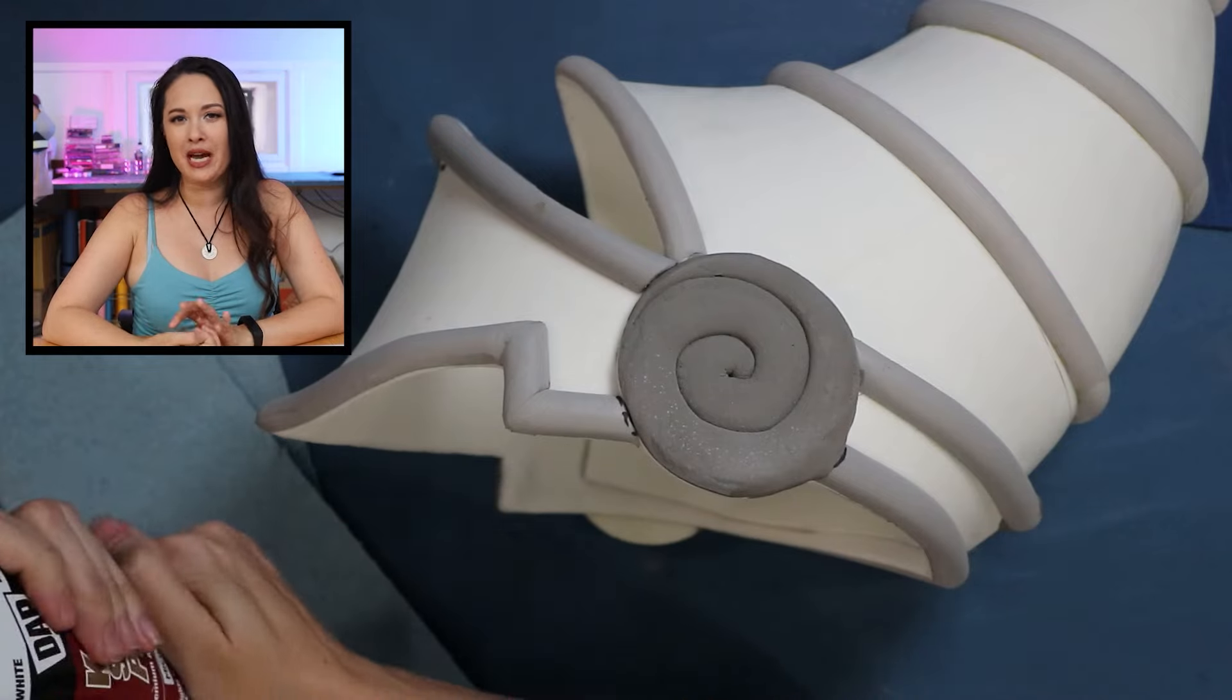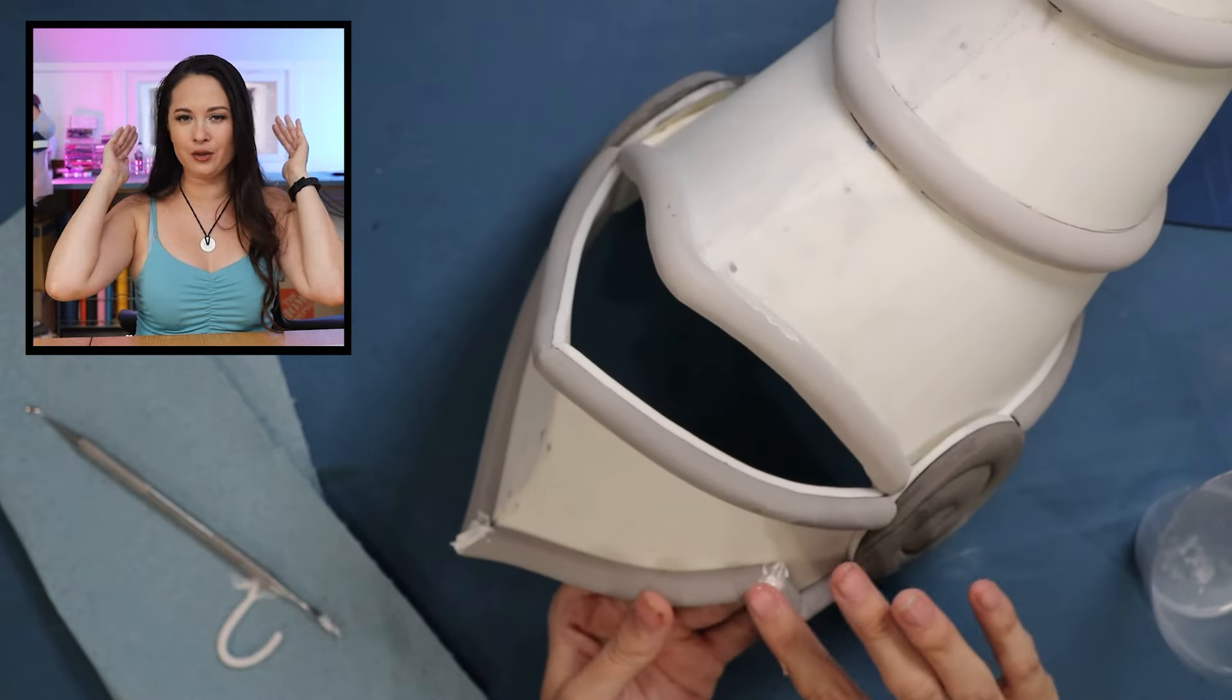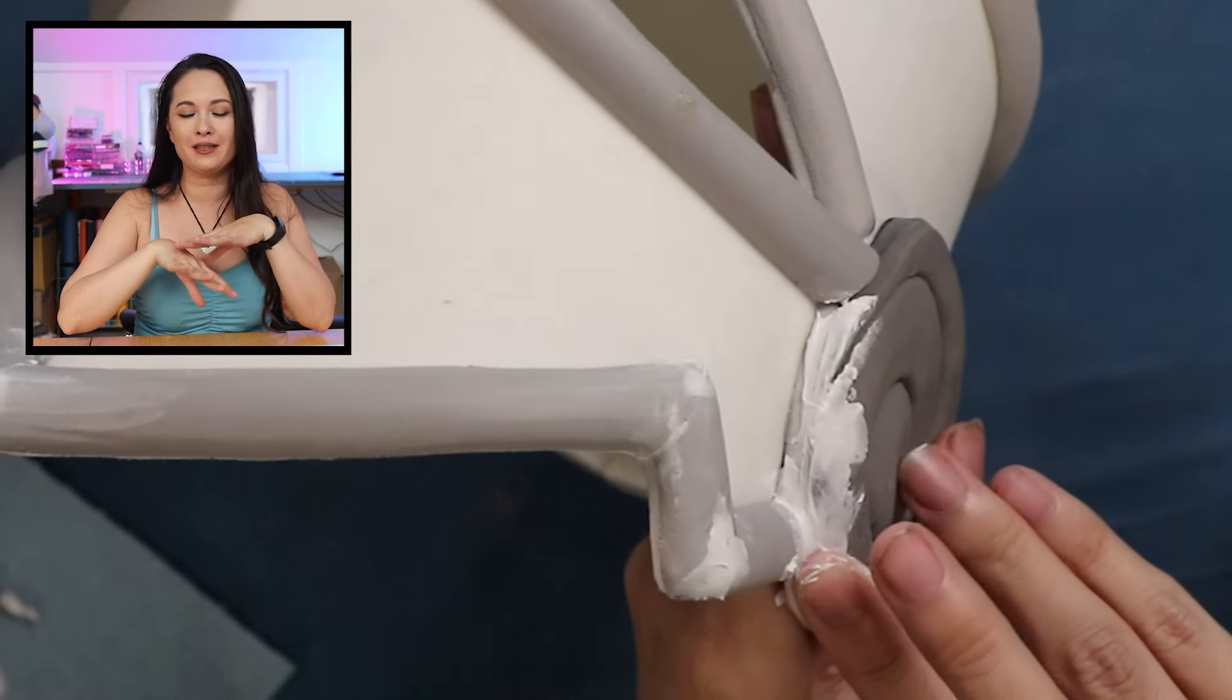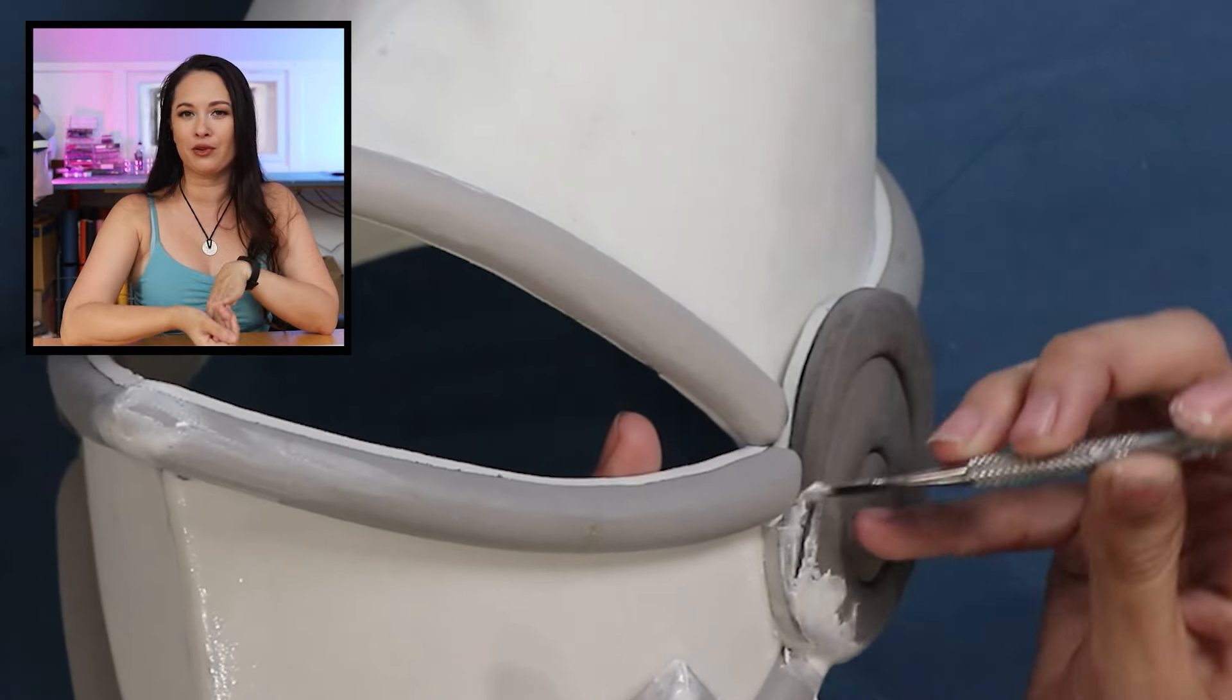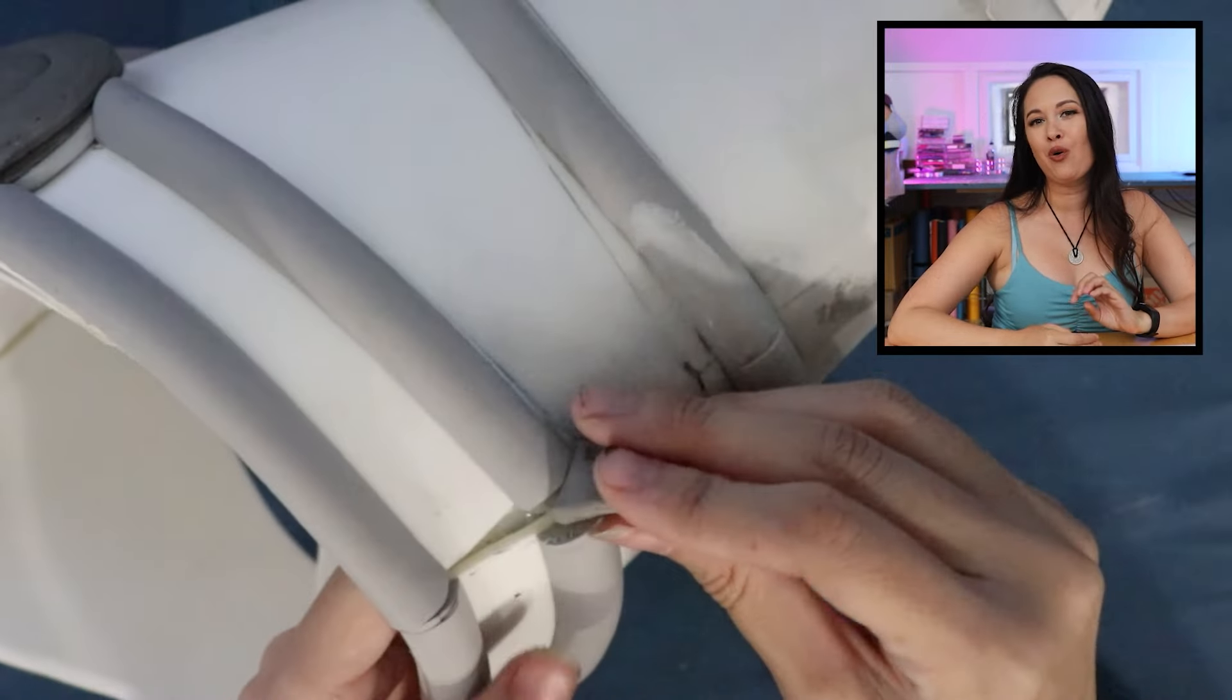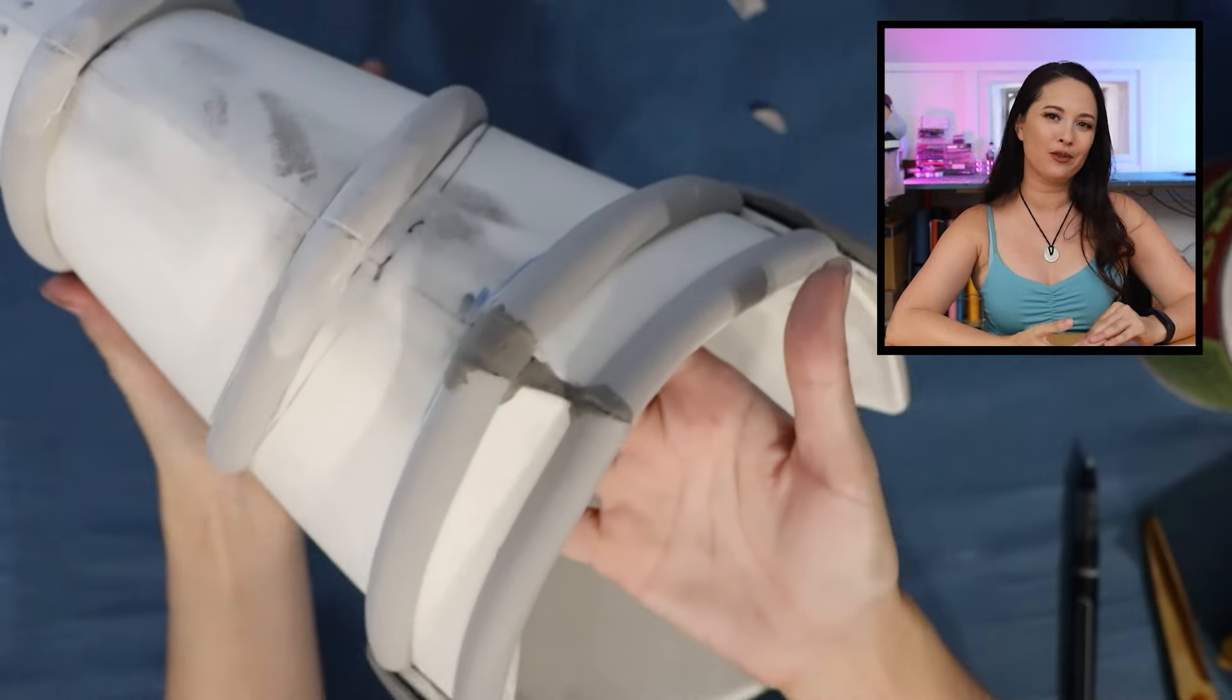I've also ended up with some gaps here because the visor is curved, but the spirally bits weren't because I just didn't dry it on a curved surface. But I'm just going to fill in some of those gaps with foam clay. And now we can actually glue the visor to the hat base. And my trim didn't quite line up here, but I'm filling the gaps with foam clay.